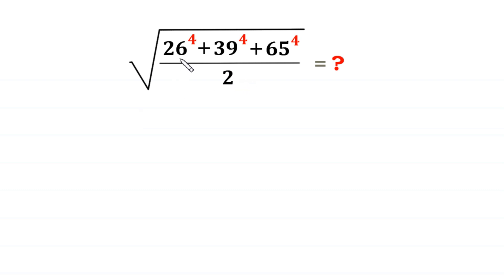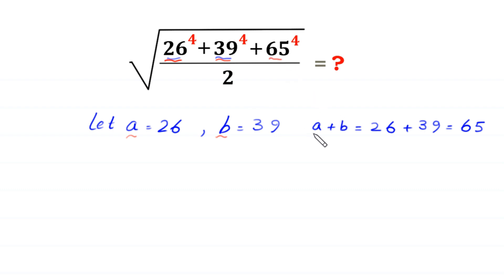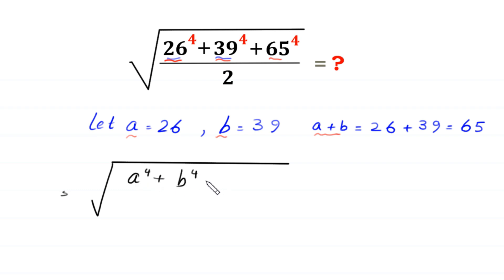First of all, we suppose that 26 is equal to A and 39 is equal to B. Let A equal 26 and B equal 39. Then A plus B will be equal to 26 plus 39, which equals 65. So we replace 26 with A, 39 with B, and 65 with A plus B. Then this expression will become square root of A to the power 4 plus B to the power 4 plus A plus B to the power 4, divided by 2.